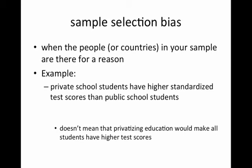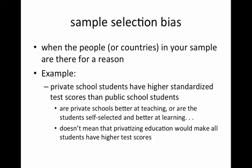Here's an example: private school students have higher standardized test scores than public school students, so you might think those schools are better. But you don't know that, because private schools might or might not be better at teaching — for sure, though, the students are self-selected and they might be better at learning. Who goes to private schools? Mostly richer people. Those kids may have certain benefits so that even if they went to a public school, they would still do really well.